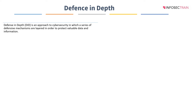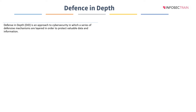Defense in depth is an approach to cybersecurity in which a series of defensive mechanisms are layered in order to protect valuable data and information. Defense in depth is an information assurance strategy that provides multiple redundant defensive measures in case a security control fails or vulnerabilities are exploited.